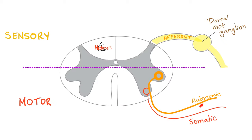Your autonomic fibers in the spinal cord start from the lateral horn cell, and all of this is called preganglionic. Then you have your ganglion. After that, you have many postganglionic fibers.